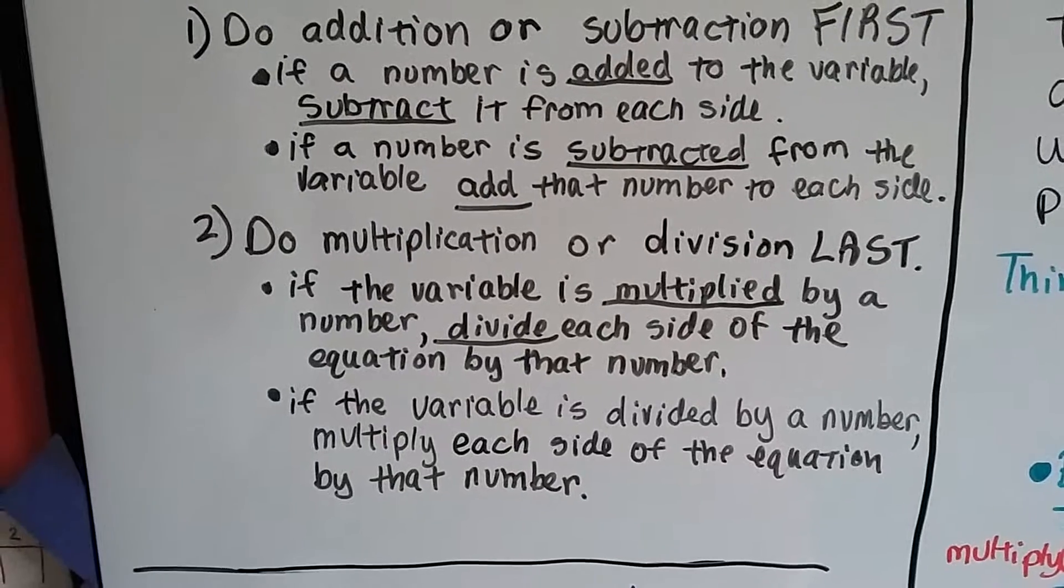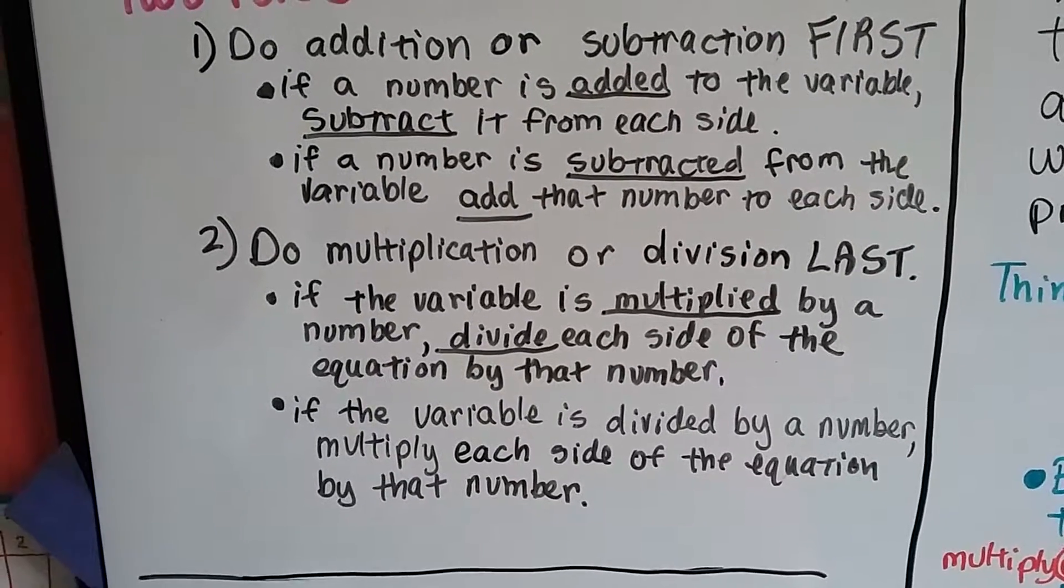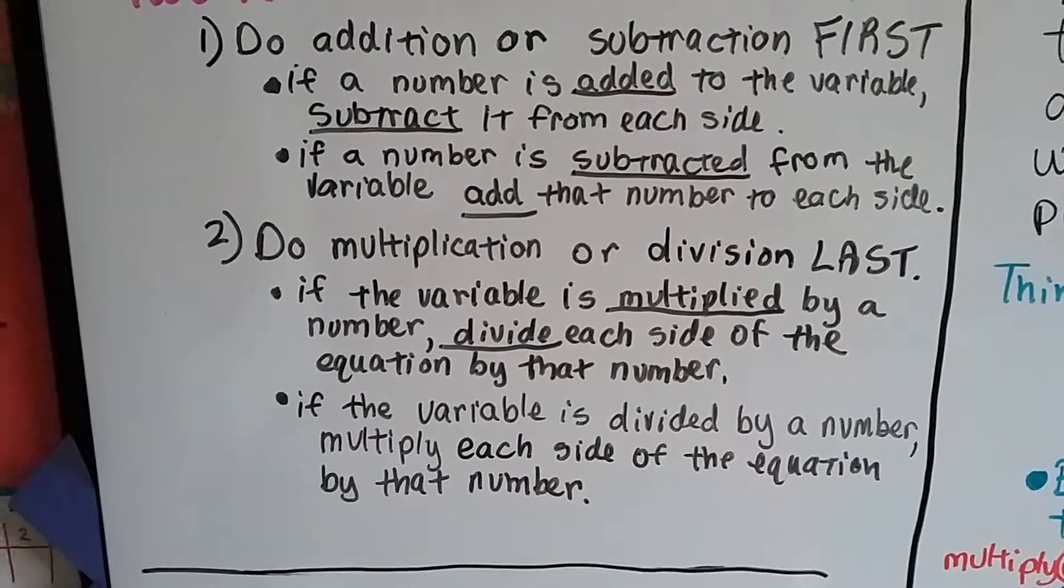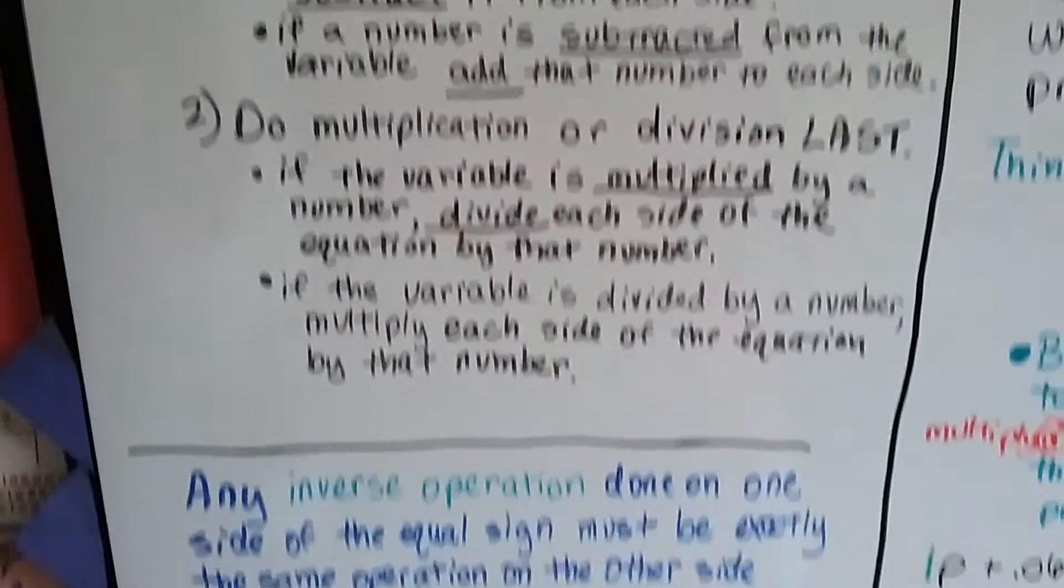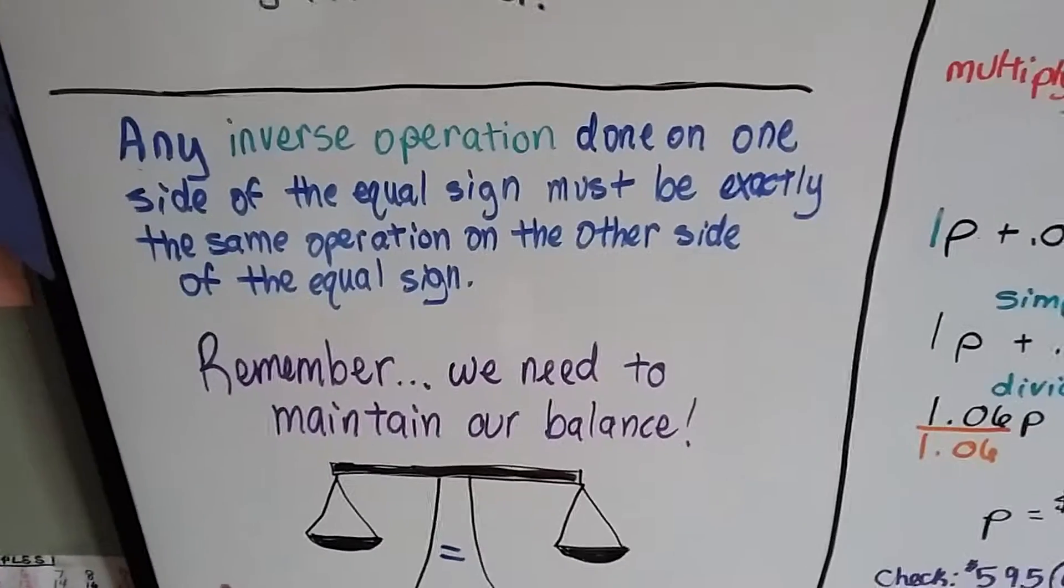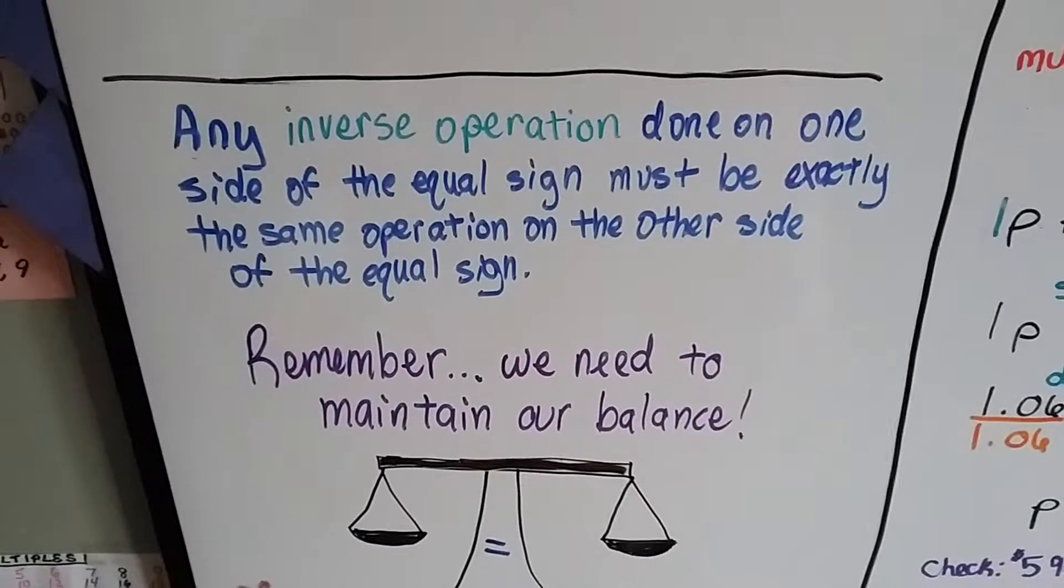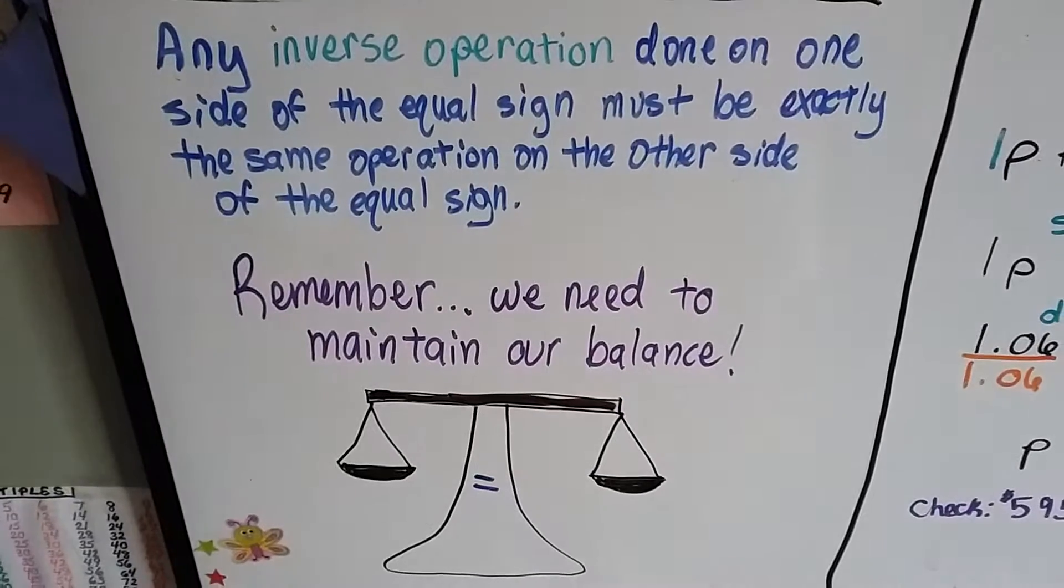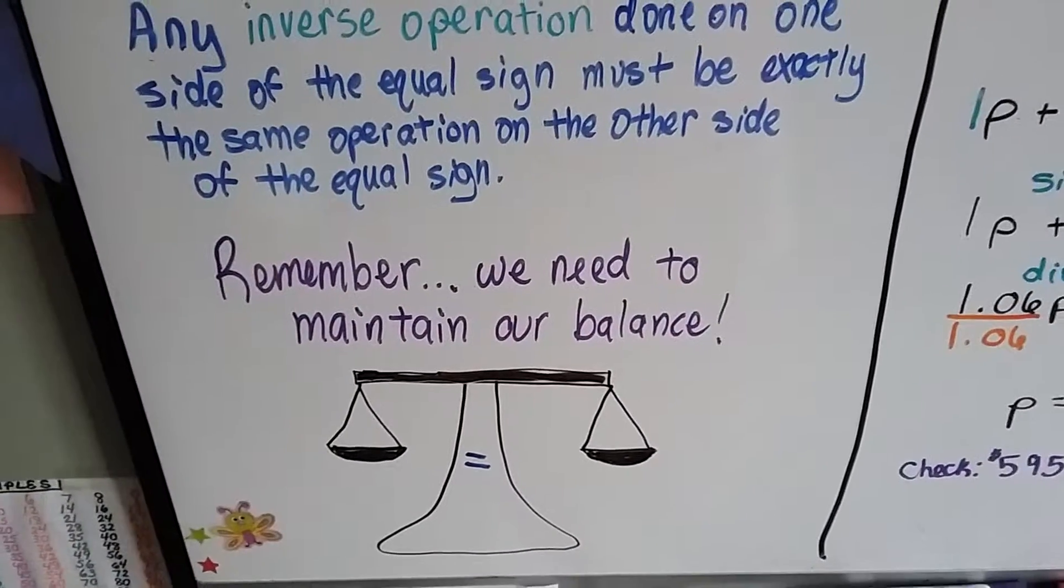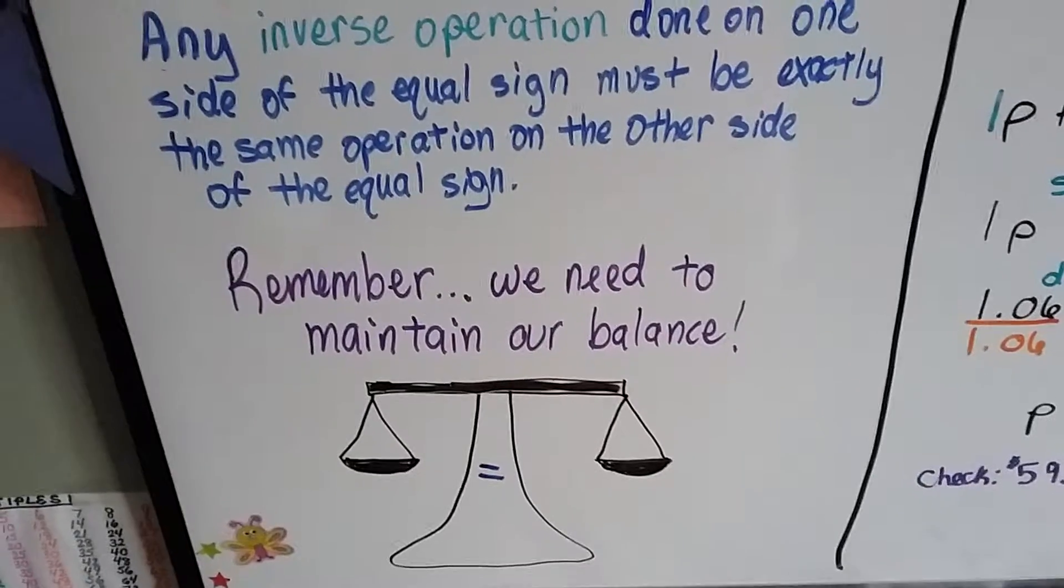If the variable is multiplied by a number, we're going to divide each side of the equation by that number. And if the variable is divided by a number, we're going to multiply. We're going to do the inverses. So any inverse operation done on one side of the equation must be exactly the same operation on the other side. Remember, we need to maintain our balance. We don't want the scale to tip one way more than the other.